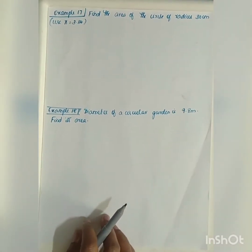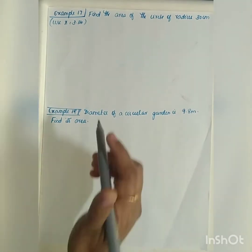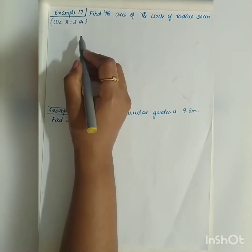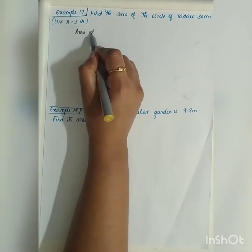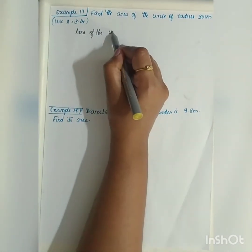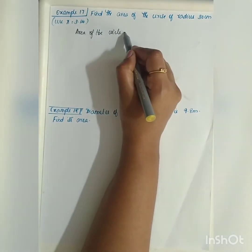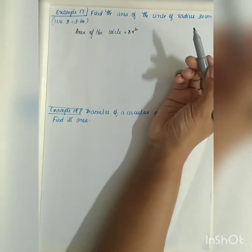The next question is example 17. Find the area of the circle of radius 30 centimeter. What is the area of the circle? We know the formula. Area of the circle is equal to pi r square.